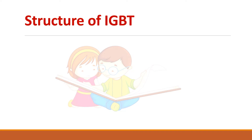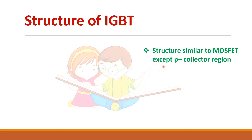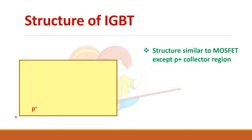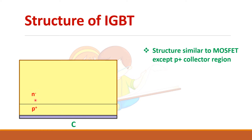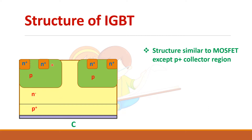The structure of IGBT is similar to that of a MOSFET, except for one P+ collector region. Normally in a MOSFET you have an N+ substrate, but in IGBT it is replaced by a P+ region, and a metallic contact is made to bring out this terminal. The N- layer is the drift region, and there is a P-type body with N+ regions which form the emitter terminal.